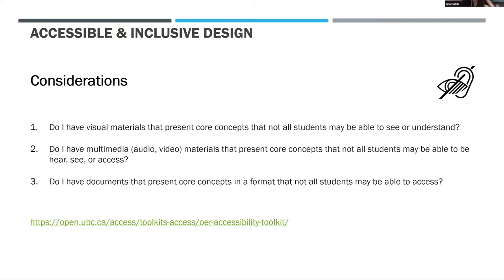To develop accessible open educational resources, here are a few considerations. Do I have visual materials presenting core concepts that not all students may be able to see or understand? Do I have multimedia audio or video materials presenting core concepts that not all students may be able to hear, see, or access? Do I have documents presenting core concepts in a format that not all students may be able to access? These core questions must be addressed before you start creating and sharing content.